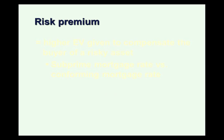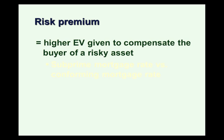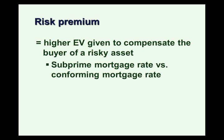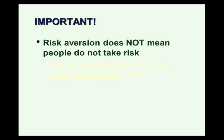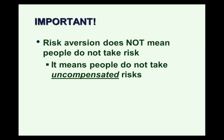Risk aversion means that risk requires compensation. The risk premium refers specifically to that compensation — it's the higher expected value given to compensate the buyer of a risky asset. For example, a subprime mortgage to a risky borrower versus a conforming mortgage to someone with a very good credit score have different interest rates; the higher subprime rate, and that difference, is the risk premium — it compensates the bank for lending to a riskier borrower. To emphasize: risk aversion does not mean that people don't take risk. It means people don't take uncompensated risks. Higher expected return is required if people are going to take on higher risk.